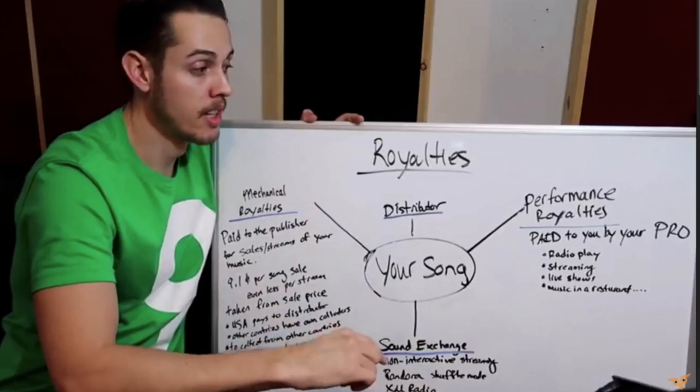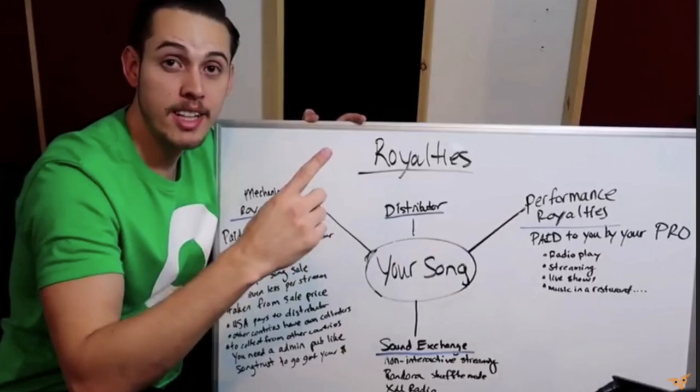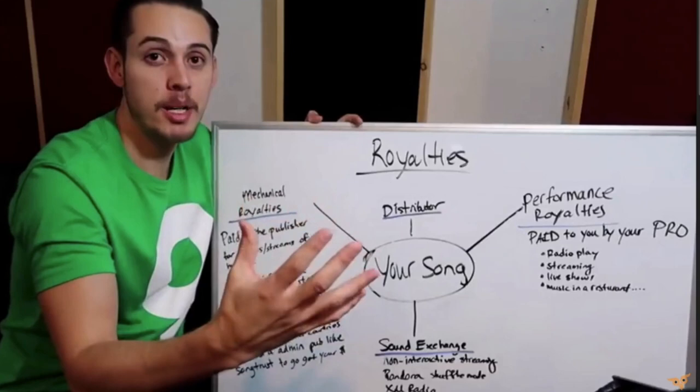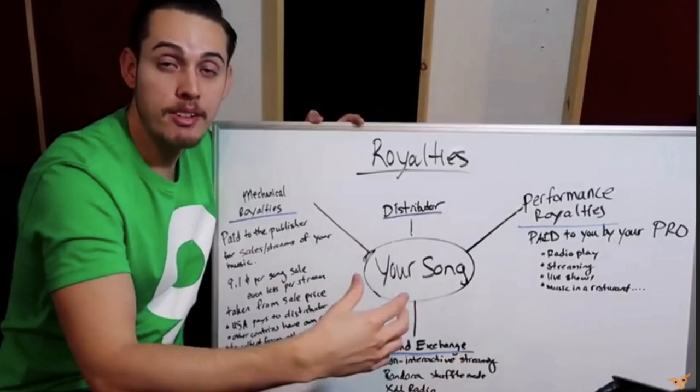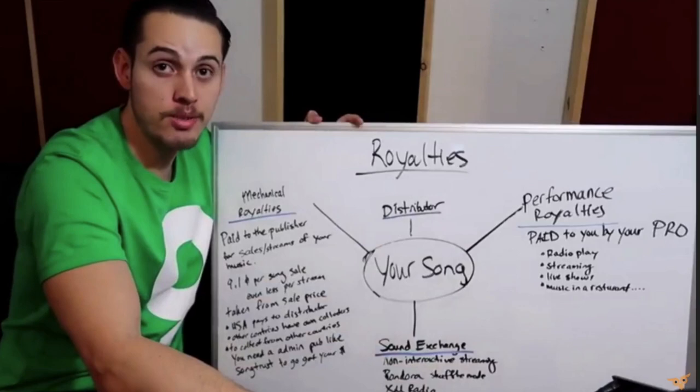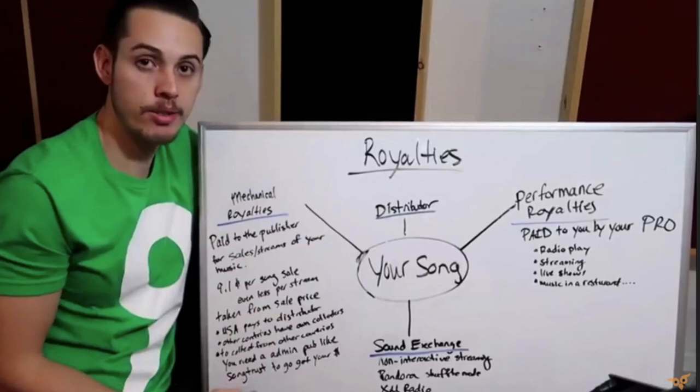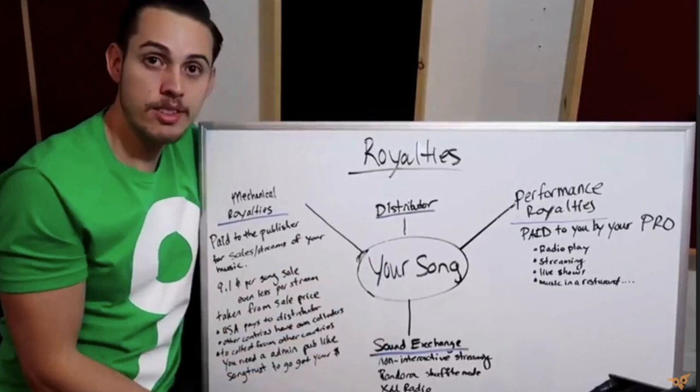To collect performance royalties you must go through your PRO. You can choose BMI or ASCAP, but once you sign up with one you're stuck — you can't have both. When you sign up with a PRO there are two accounts: a writer's account and a publishing account. The writer's account is paid half the money and the publishing account the other half, assuming you own full rights. Every time a song is streamed, money is generated for both writer and publisher and paid to your PRO.